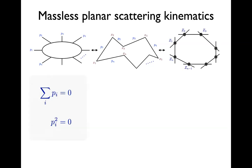I can solve the momentum conservation condition naturally in planar kinematics by introducing dual variables. I write the i-th momentum as the difference between two dual coordinates: xᵢ₊₁ minus xᵢ. This gives a piecewise light-like contour where the x's are the corners and the p's describe the edges sequentially, going around in a polygonal light-like loop that closes because of momentum conservation.